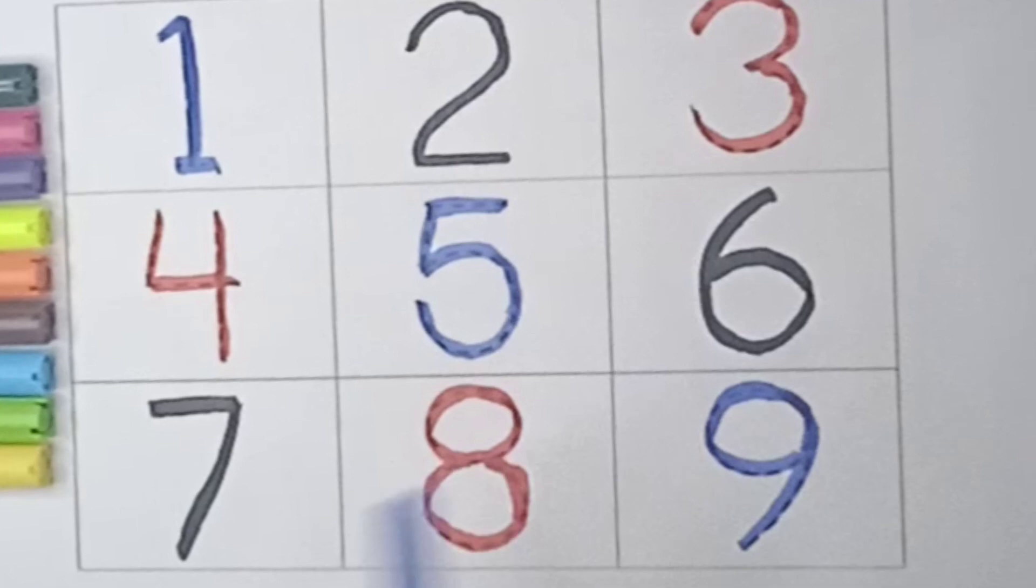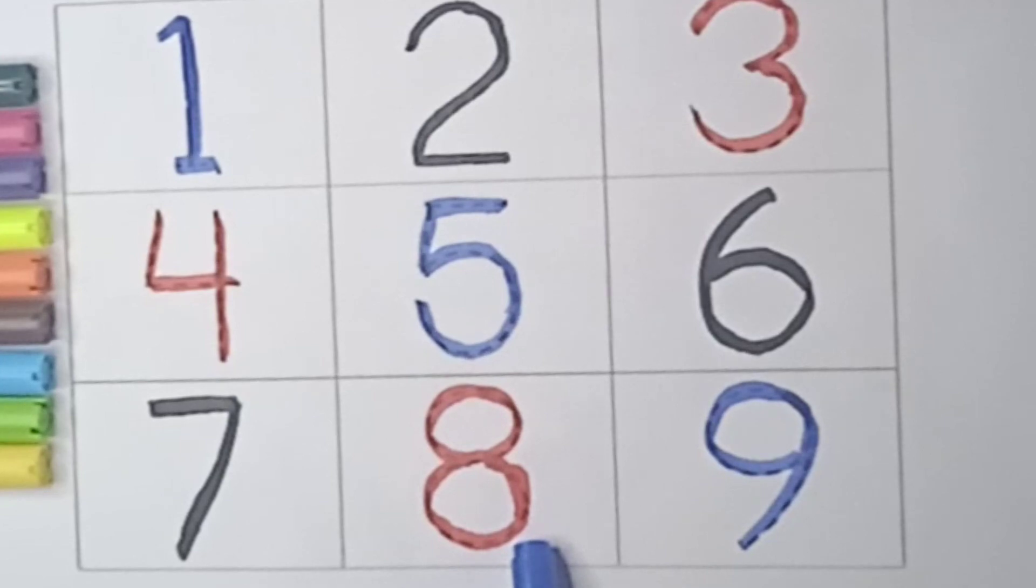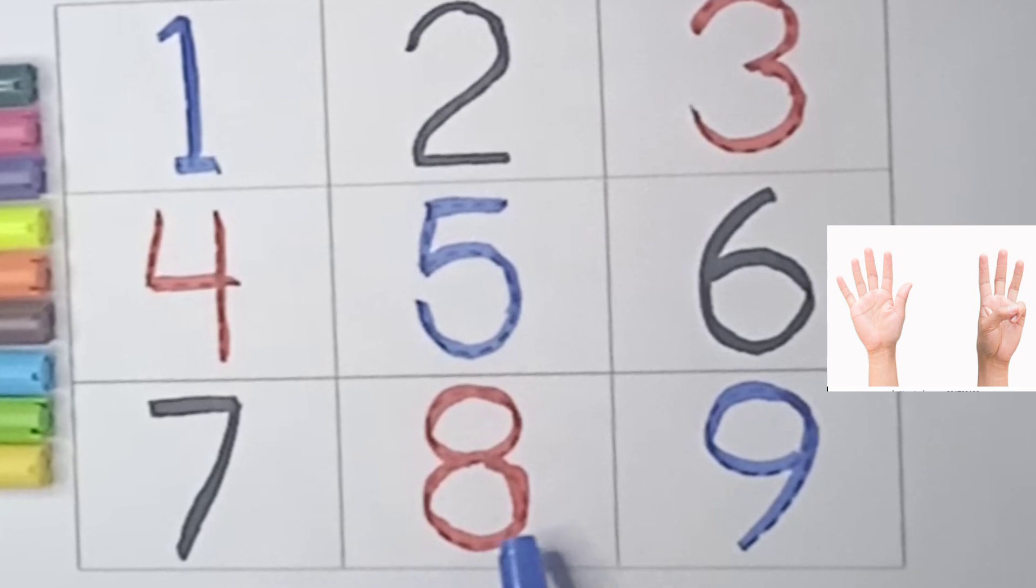This number is 7. Say 7. Count your seven fingers. 1, 2, 3, 4, 5, 6, 7. Seven fingers. 8. Count your eight fingers. 1, 2, 3, 4, 5, 6, 7, 8. Eight fingers.